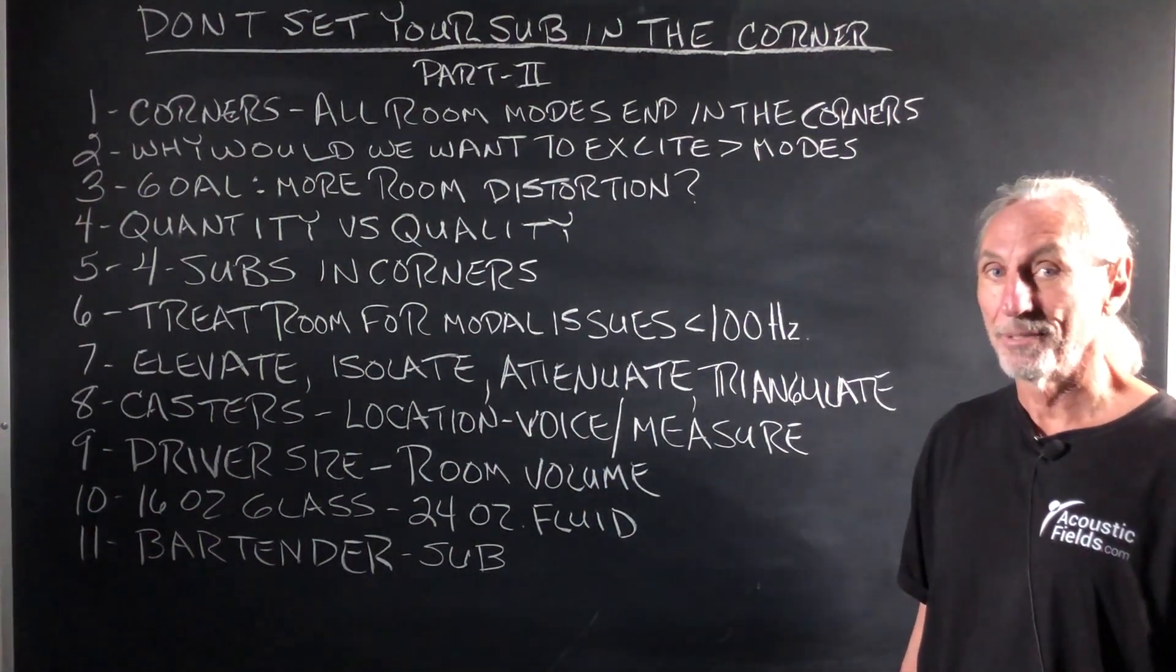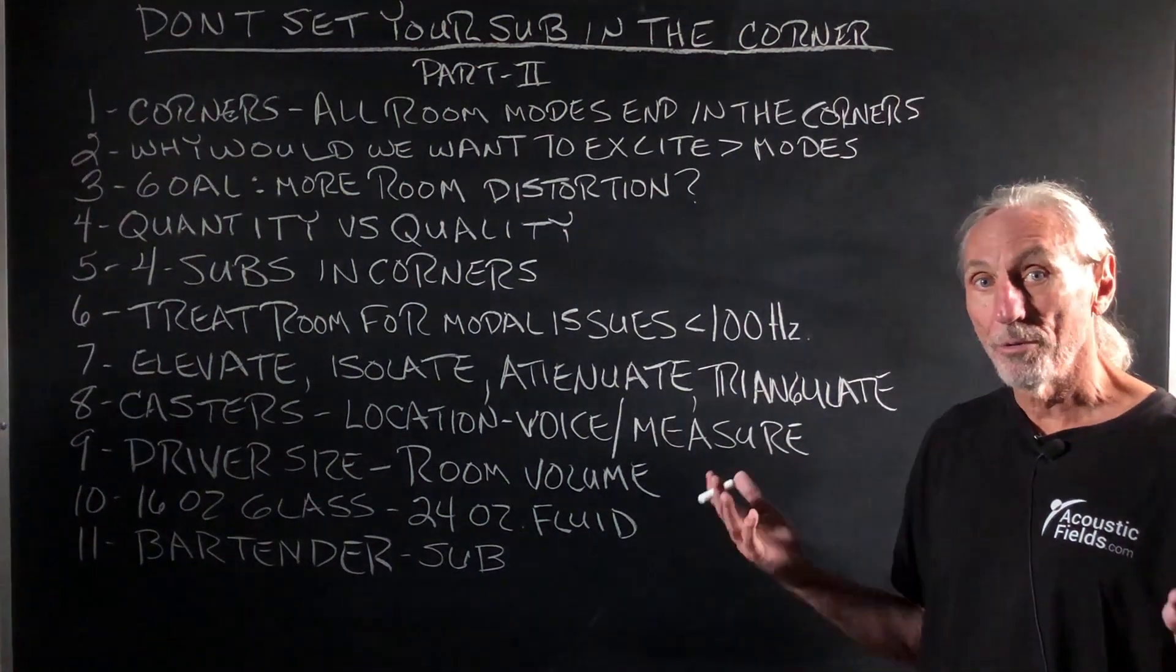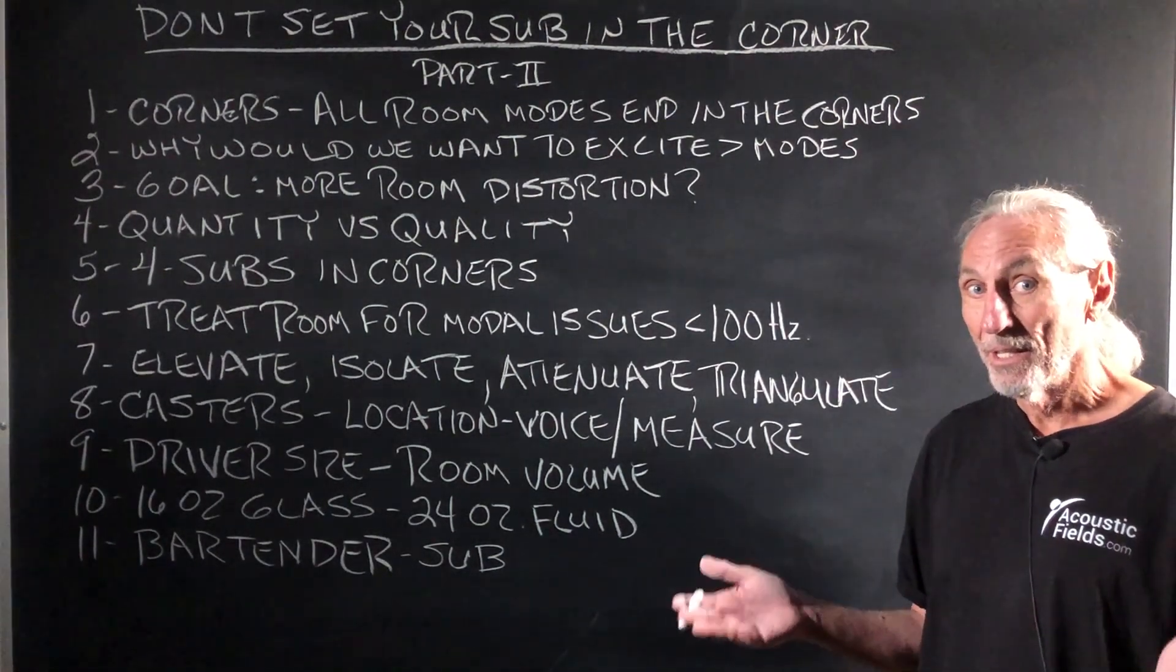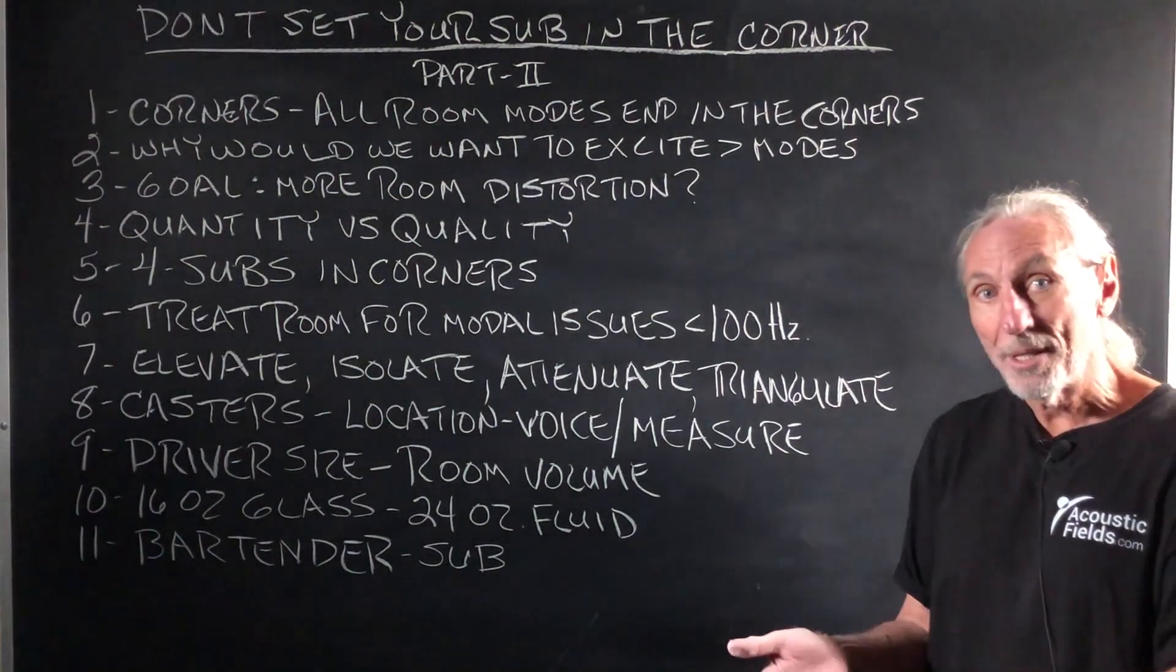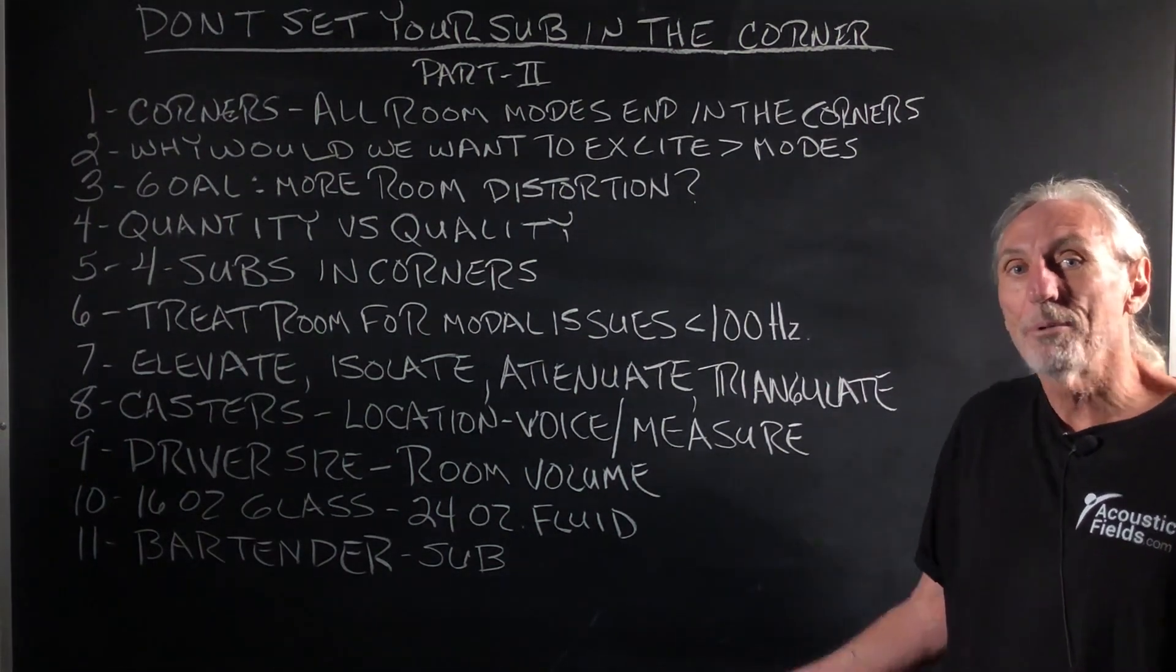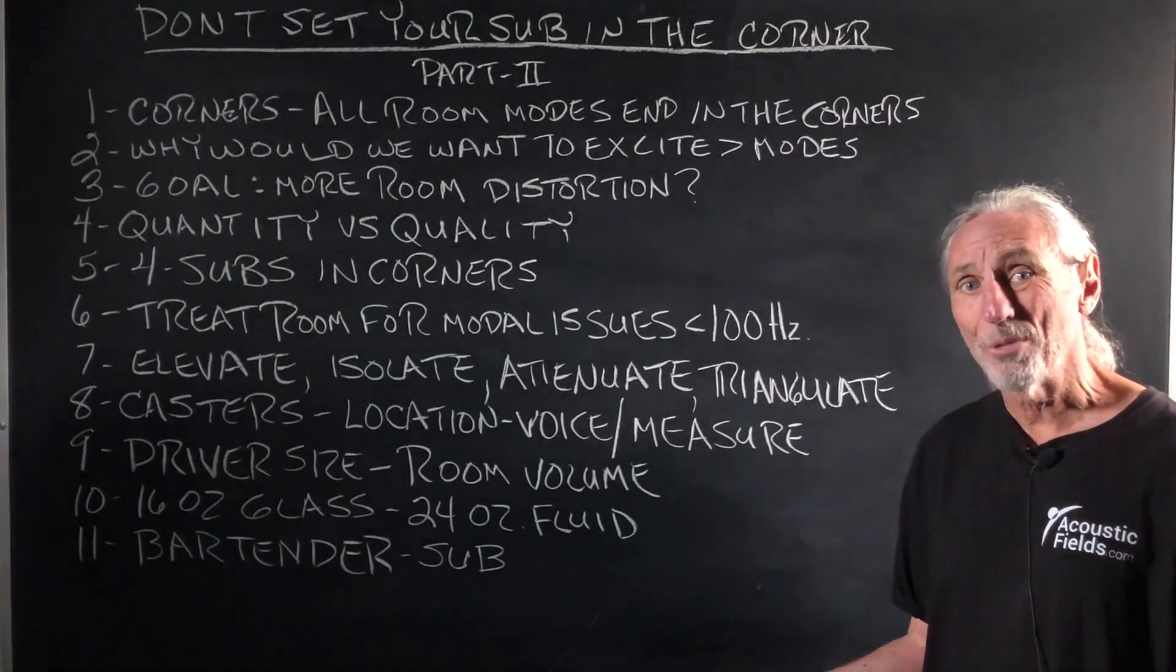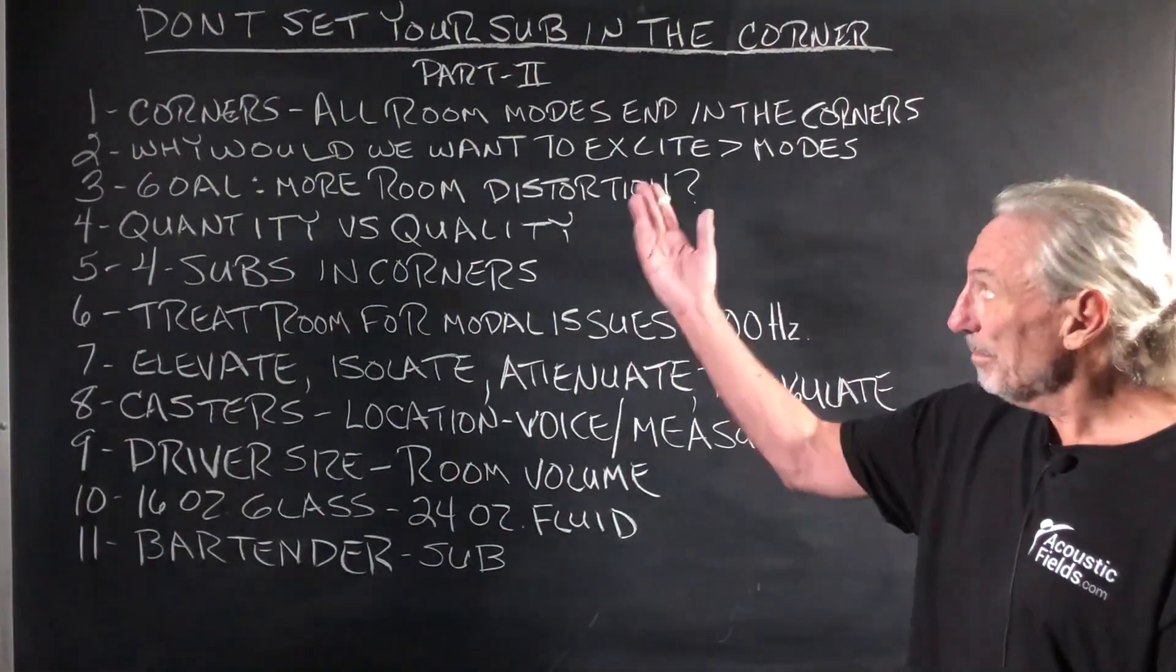A lot of nonsense out there. What are the corners of a room? There were all the room modes, those nasty creatures we've been fighting: axial, tangential, and oblique modes. They all end up in the corners. They're all partying together in the corner. Why would we want to mess with that? Our goal is to eliminate distortion, not add to it or excite more of it.